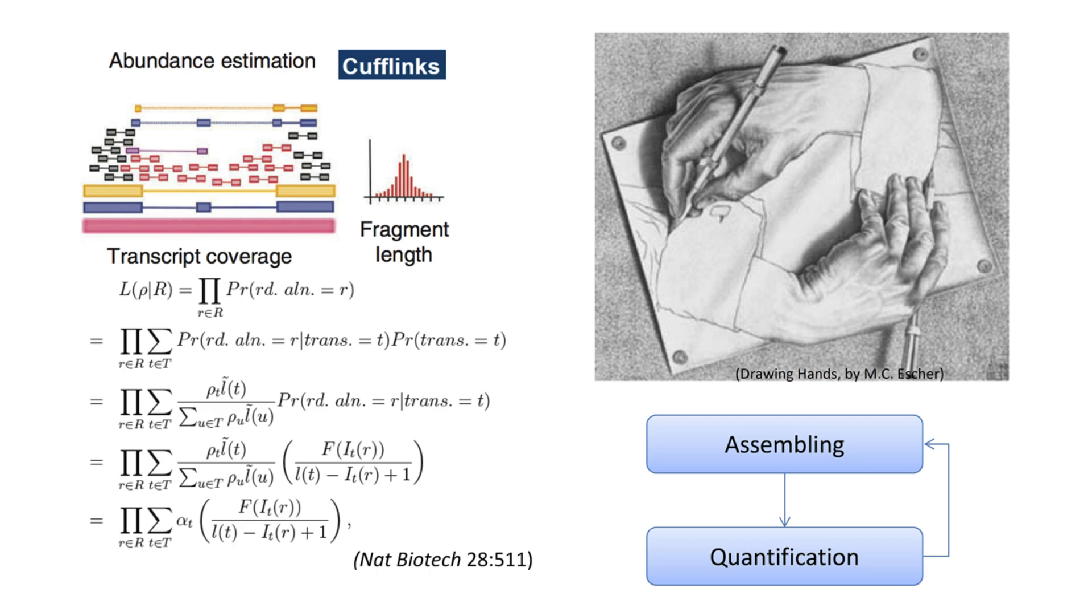Of course, this problem becomes more complicated in practice as we consider the fact that the transcript assembly algorithm determines the nature of reads distribution. For example, in Cufflinks the reads are distributed with respect to other factors, such as length distribution. In fact, transcript assembly and expression level estimation are often done by EM and other iterative algorithms to further accurately estimate the expression levels.